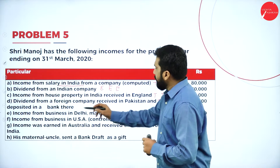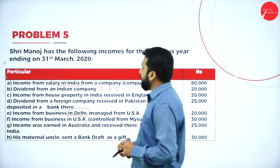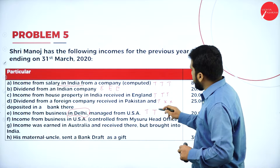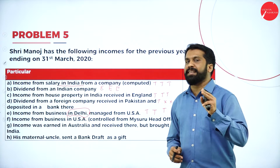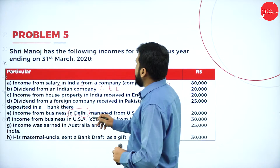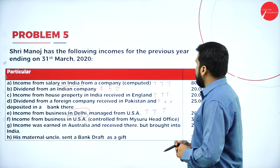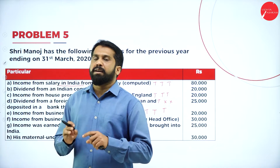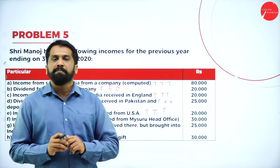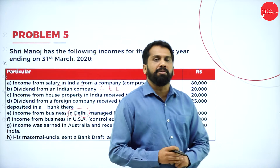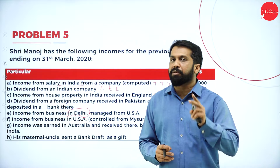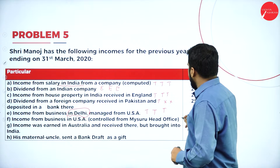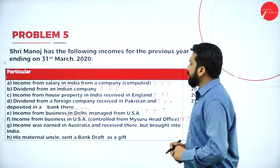Income from business in USA controlled from Mysore head office. Anything which is controlled from India — controlled from Mysore head office — will be taxable for only two persons. Anything controlled from India is taxable for two persons: taxable, taxable, and exempted for the non-resident.